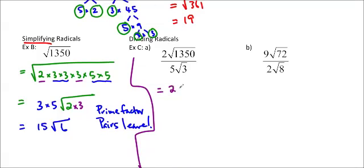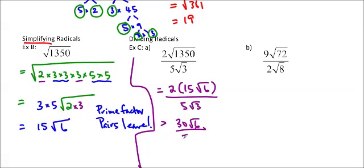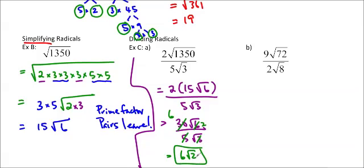So we're going to do 2 times 15 root 6 — because we know that root 1350 is 15 root 6 — over 5 root 3. So 2 times 15 is 30 root 6 over 5 root 3. Then if we can cancel anything from the outsides, we will: 30 and 5 are cancelable, so we get 6 on top and 1 on the bottom. Then root 6 and root 3 are cancelable, giving us root 2 on top and 1 on the bottom. So the answer is 6 root 2, and since the denominator is 1, we just leave it as 6 root 2.